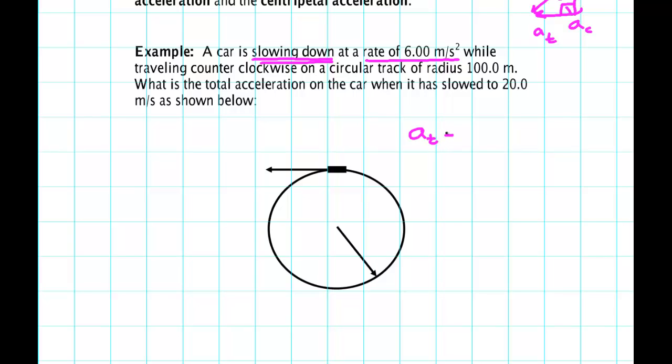That's an acceleration, what acceleration? Tangential, because it said slowing down. So 6 meters per second squared. If this is the velocity, then the tangential acceleration points that away. Then it says it's on a circular track of radius 100 meters, so we know that R is 100 meters.